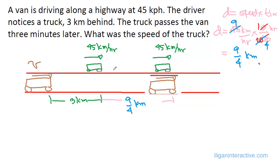So, now if we want to solve for the speed of the truck, speed of the truck is distance over time. Distance traveled by the truck is actually 3 km plus 9 over 4, right? 3 plus 9 over 4 kilometers all in all, divided by the time, which is just 3 minutes, which is 3 over 60. Or, we can just simply have that 3 minutes over 60 is 1 over 20 hours.